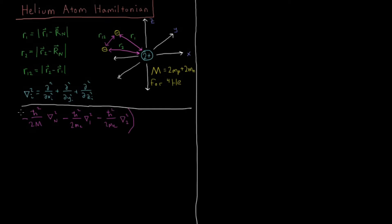Then all of that will multiply times our wave function, which is a function of the position vector of the nucleus, Rn, and then the positions of each of the electrons, R1 and R2. Continuing on to the next line, those are all our kinetic energies. Each particle has kinetic energy.